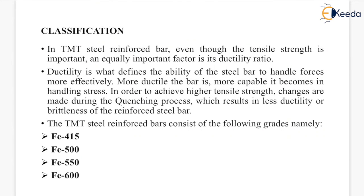Now the classification. In TMT steel reinforced bars, even though tensile strength is important, an equally important factor is the ductility ratio. Ductility defines the ability of the steel bar to handle forces more effectively — the more ductile the bar, the more capable it becomes in handling stress. To achieve higher tensile strength, changes during the quenching process result in less ductility. TMT steel reinforced bars consist of grades FE415, FE500, FE550, and FE600.